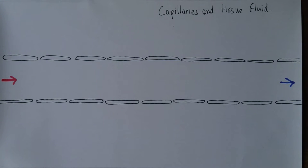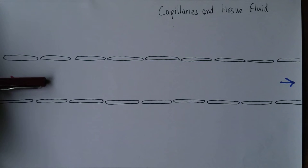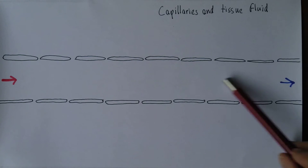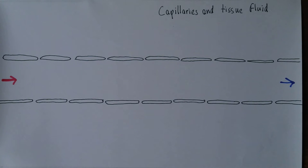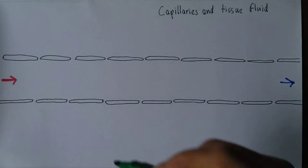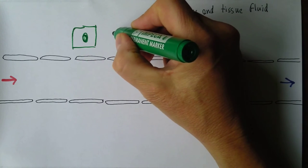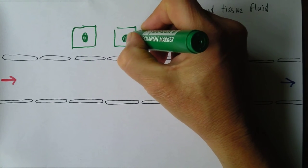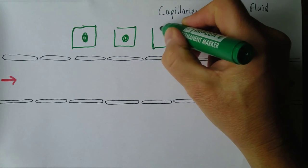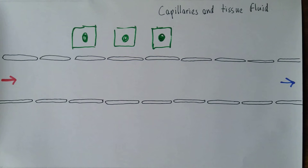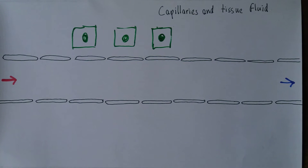Here we have our capillary, and we notice that blood is entering from the arterial end. Once the blood is somewhat deoxygenated, it is exiting via the venous end. The capillaries are very close to the tissues of the body — here we have some body cells. What we want to look at is the physiology of the capillaries and tissue fluid, and the first thing to notice are the various pressures involved.